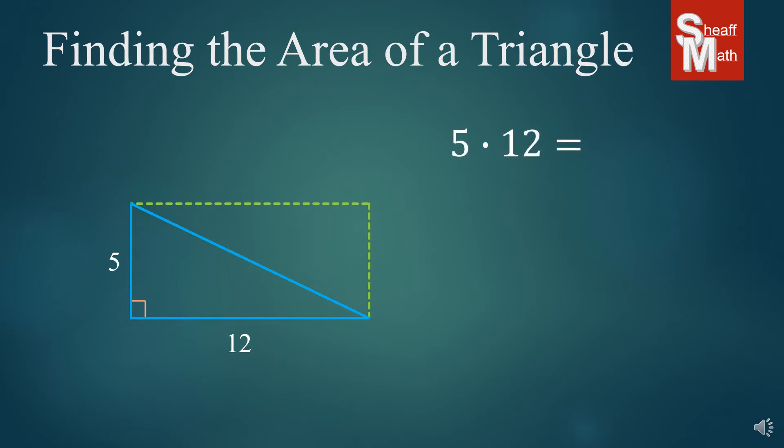So we're going to multiply 5 times 12, which makes 60, and then we're just going to cut it in half, divide it by 2, and we get 30. And so our answer for this would be 30 square units. Now, the actual formula for the area of a triangle is base times height divided by 2, or one half times base times height. So all you have to do is put in the base and the height, 12 times 5, divide that by 2, and we get 30 square units.